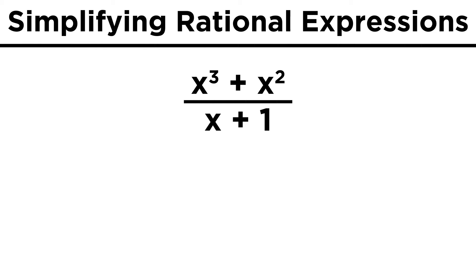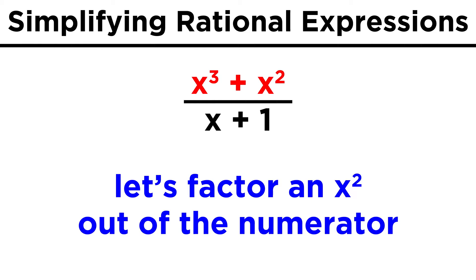if we have x cubed plus x squared over x plus one, we can see that in the numerator, we could factor an x squared out of each term. That would leave us with x squared times the quantity x plus one.